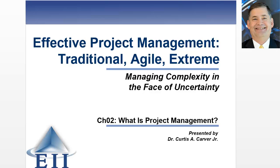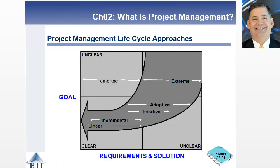Welcome to the fifth of six videos looking at what is project management. What we're going to do now is build on the last two lessons and bring it all together — overlaying the different types of approaches on top of the project management landscape so you can see how this all ties together and what your trade-offs are. There are your four quadrants: goals and solutions. As you move from clear to unclear in terms of requirements and goals, you move from the linear incremental model over to the iterative, adaptive, extreme, and emergency models.